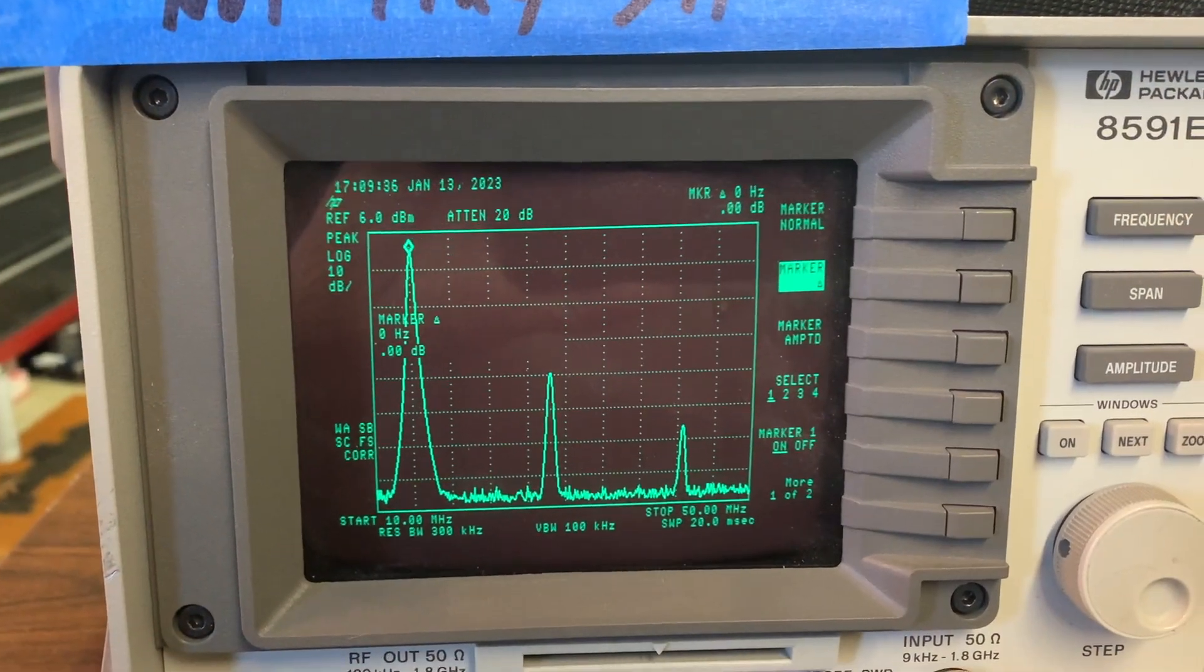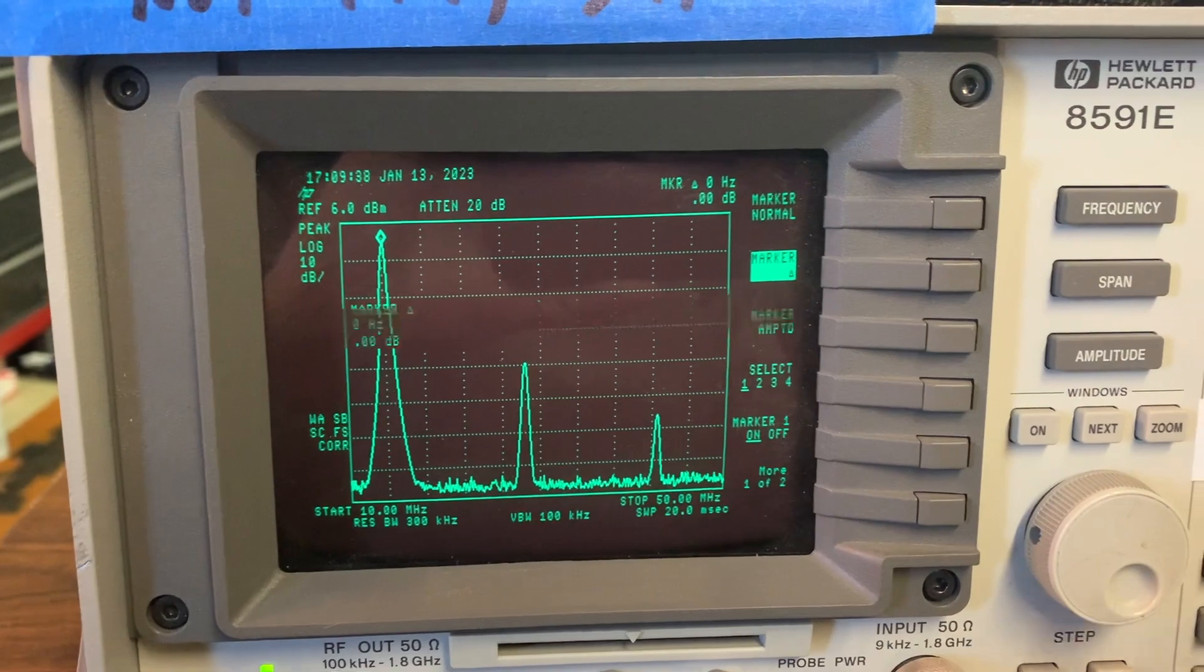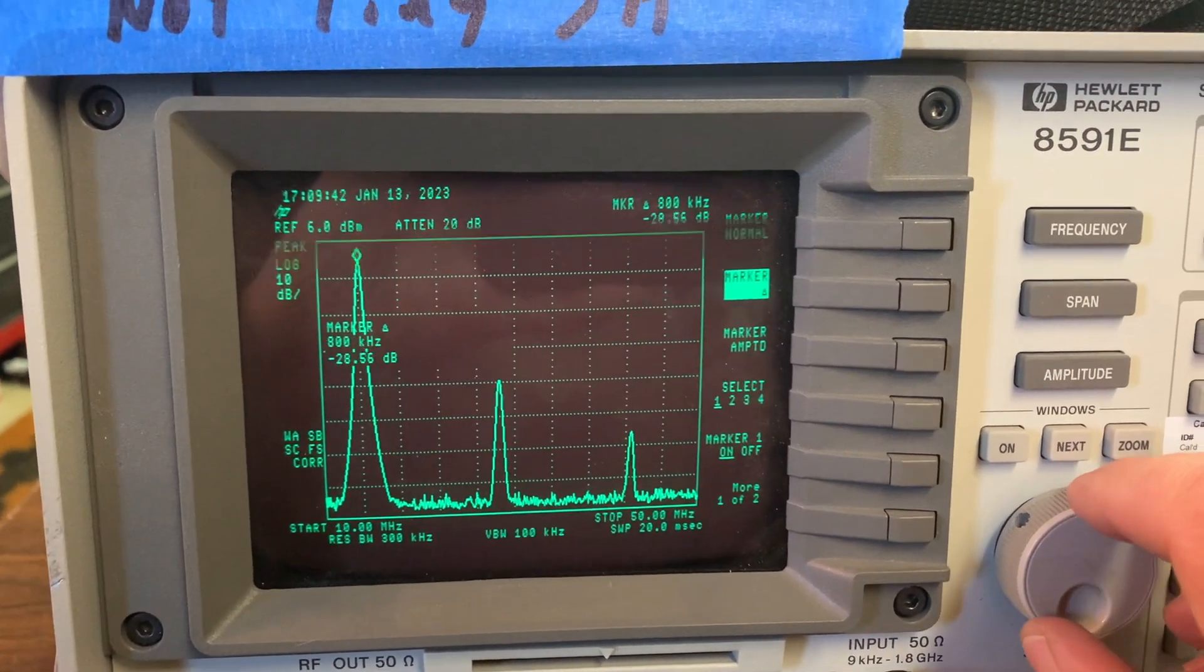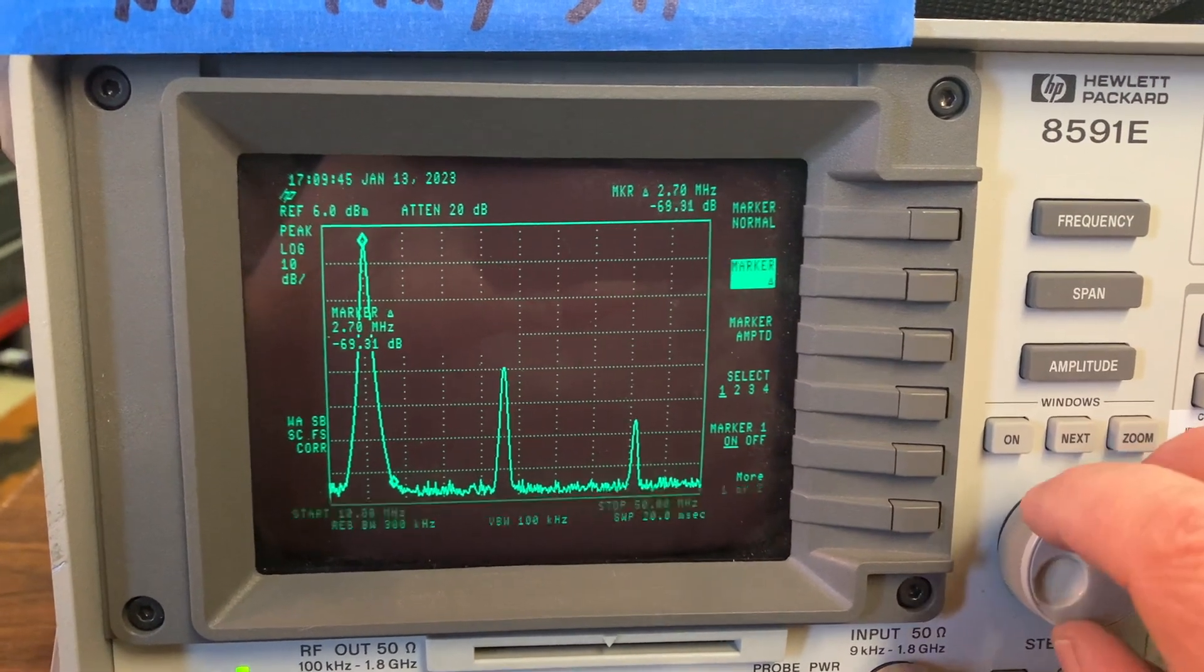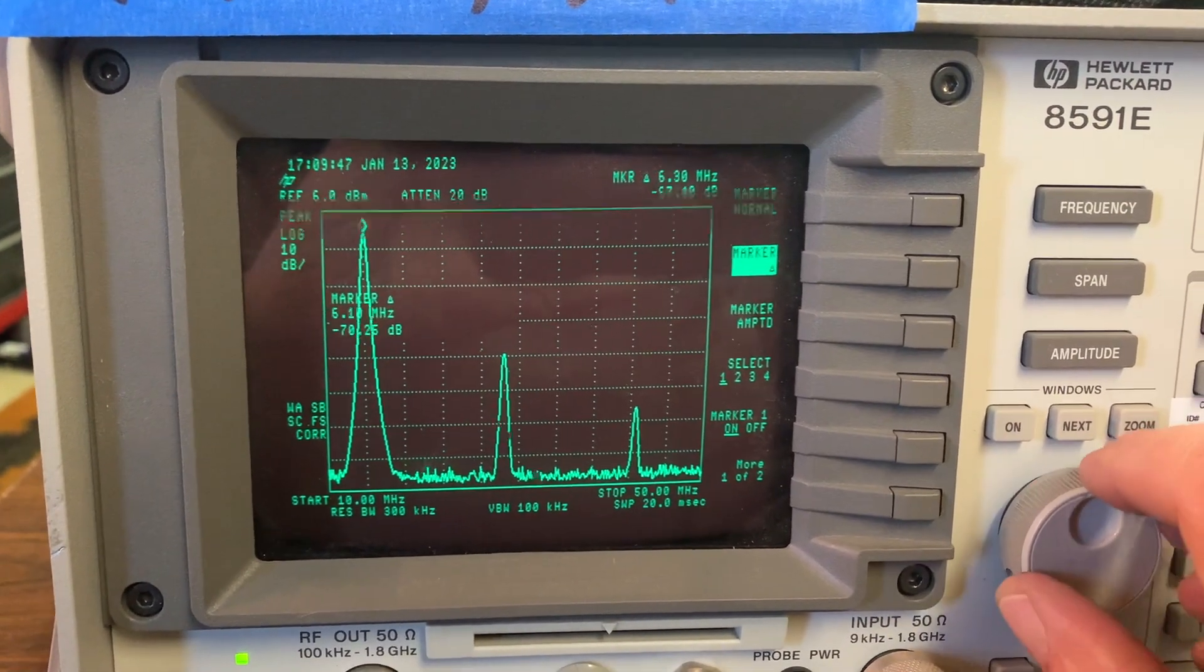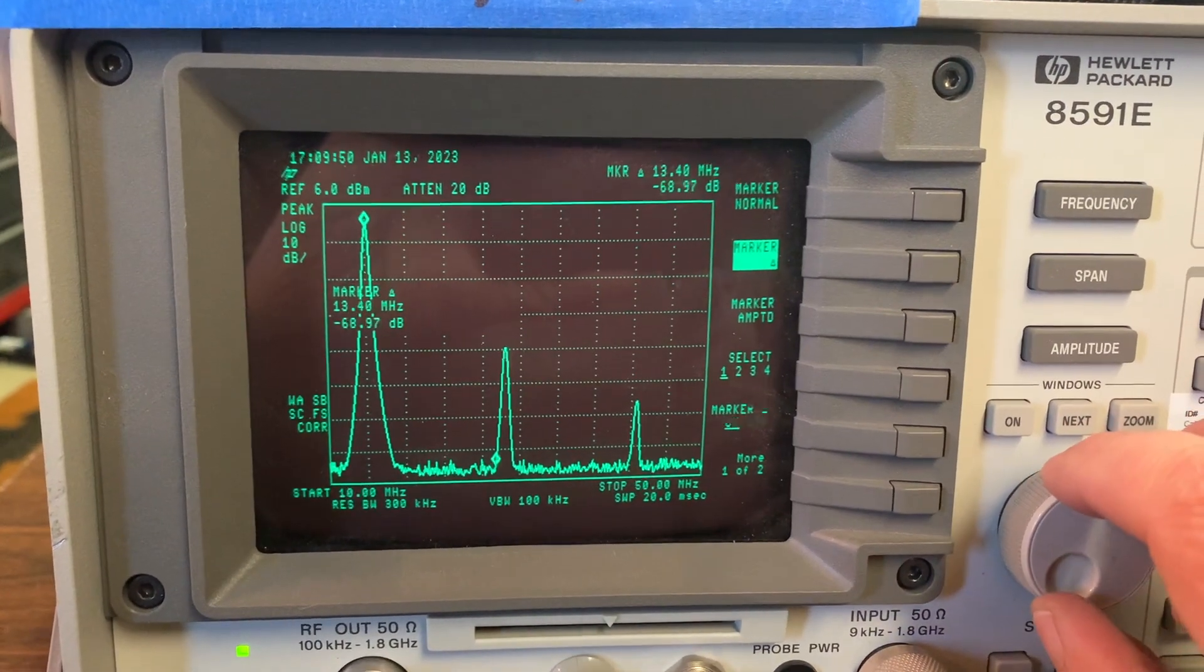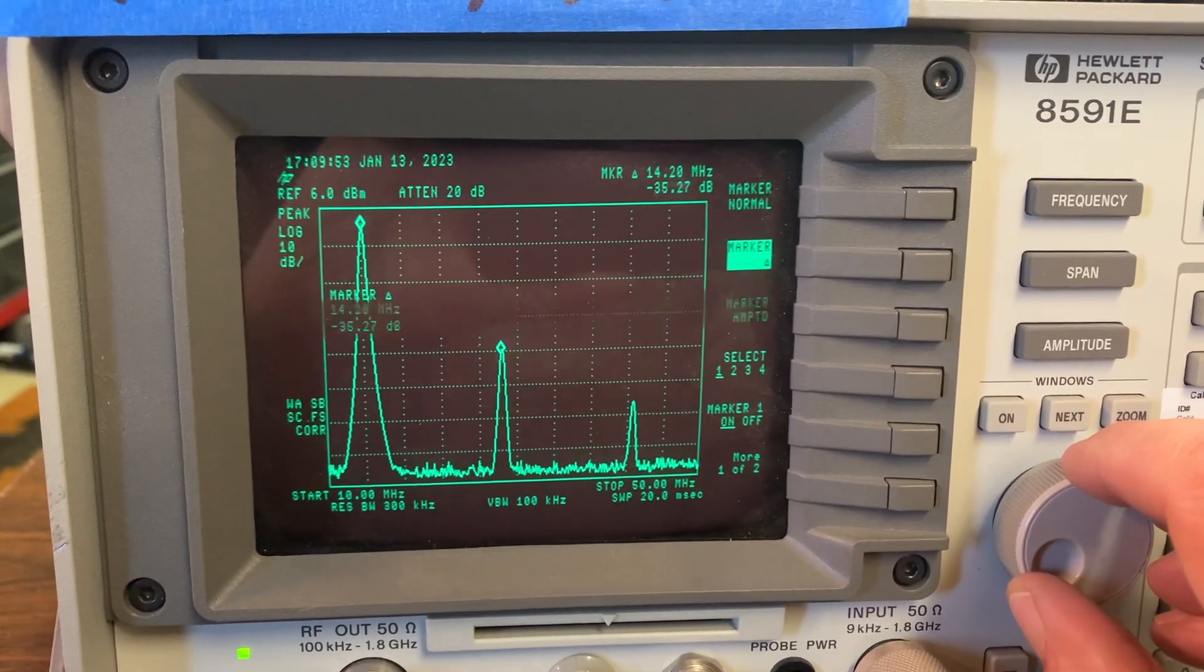So let's see how the amplifier performed here. You can see the fundamental there on the left-hand side and we've got the second and third harmonic displayed. I've got the 8591 in the split marker mode which will give us the delta difference from the fundamental to the second harmonic.